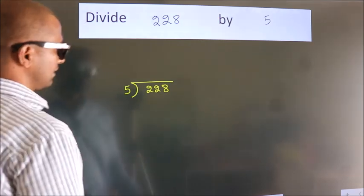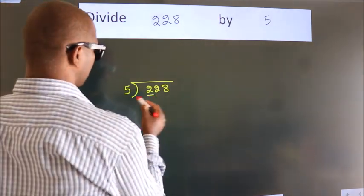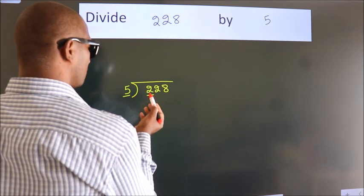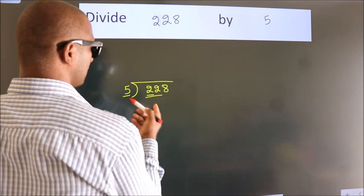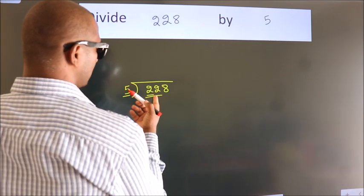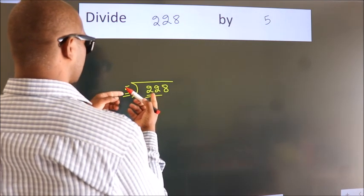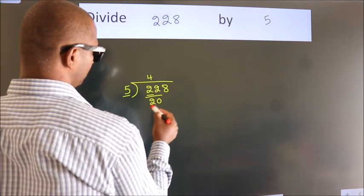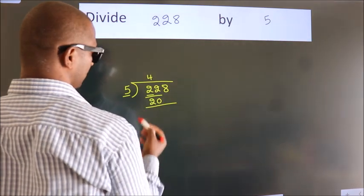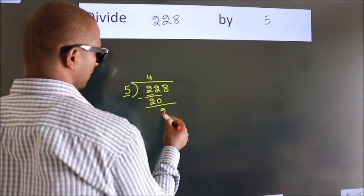Next, here we have 2. Here 5. 2 is smaller than 5, so we should take 2 numbers: 22. A number close to 22 in the 5 table is 5 times 4 equals 20. Now we should subtract. We get 2.